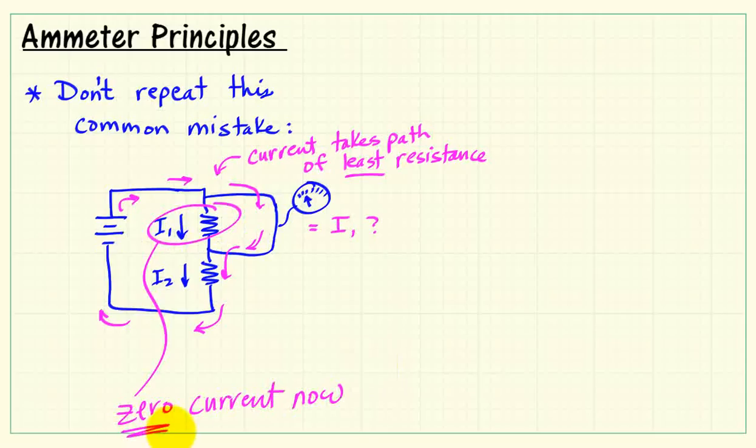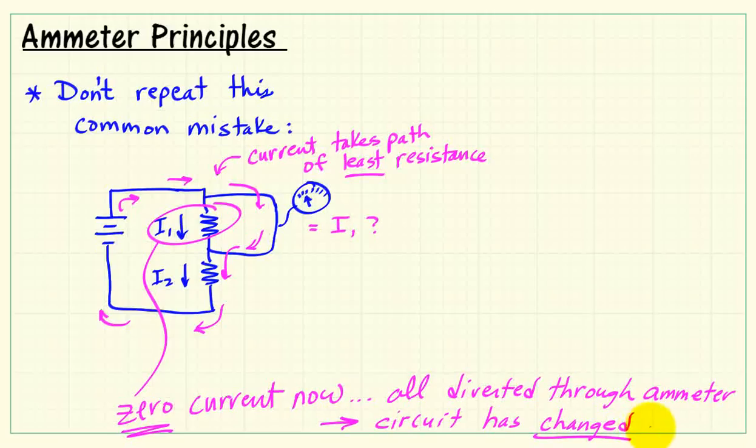In fact, the resistor would have essentially zero current. And that current I1, diverted through the ammeter, is not the same as the original. The circuit has changed.